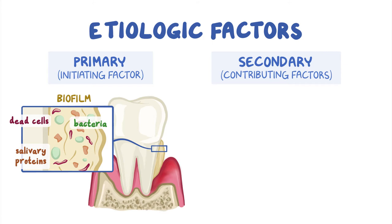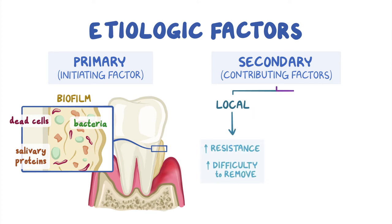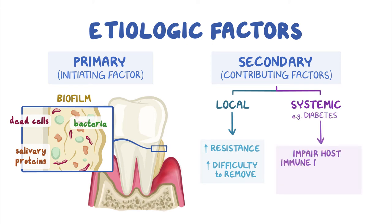Secondary etiologic factors are further subdivided into local factors, which make the dental plaque more resistant and difficult to remove, and systemic factors, which include conditions like diabetes that could impair the host's immune response and increase the risk of periodontitis.